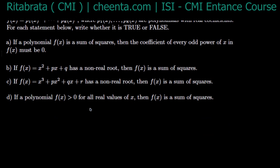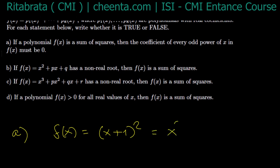For part (a), it's not true. For example, take f(x) = (x+1)² = x² + 2x + 1. Here the odd degree term is x and its coefficient is 2, which is not 0. You can take many such examples, like (x² + x + 1)², where the coefficient of x is also nonzero. So part (a) is false.